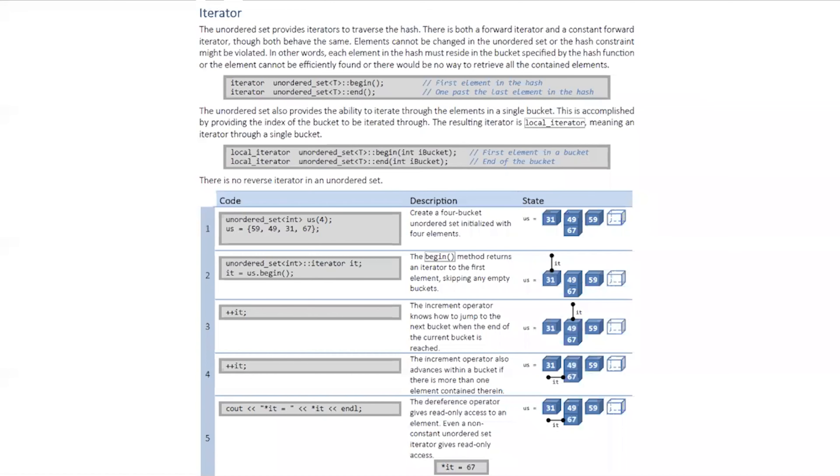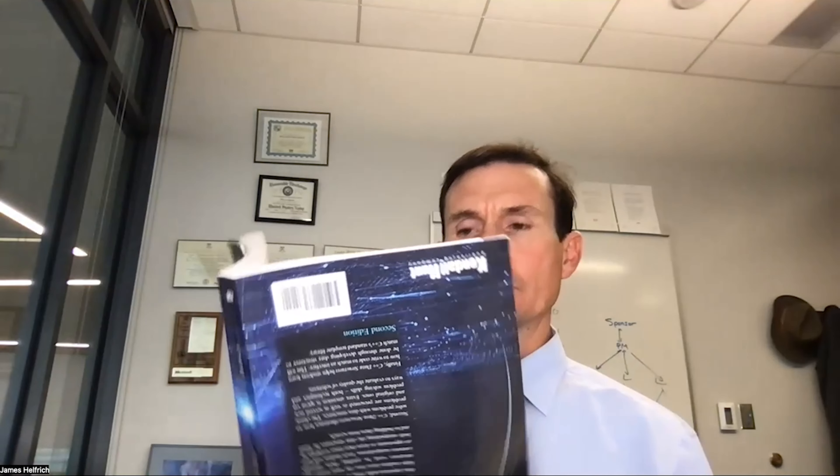You can learn more about how the iterator works for the unordered set by reading the iterator section of the hash chapter of the C++ data structures textbook.